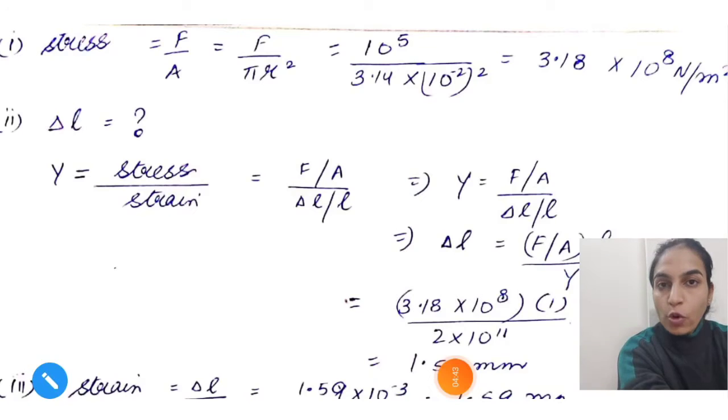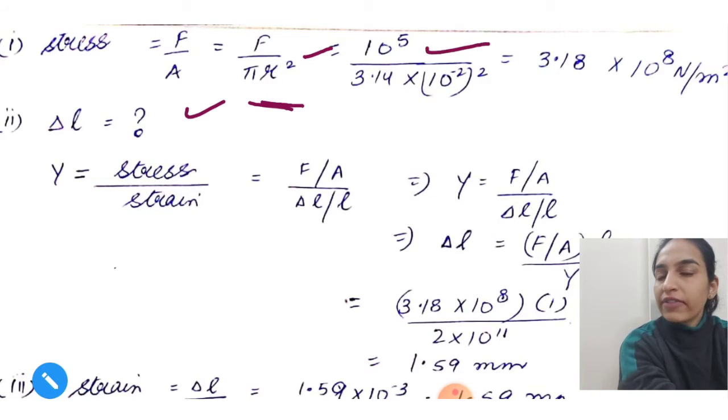First you need to find stress. Stress formula is force upon area, which is pi r square. Force given is 10 to the power 5, area is calculated, so the answer is 3.18 into 10 to the power 8.